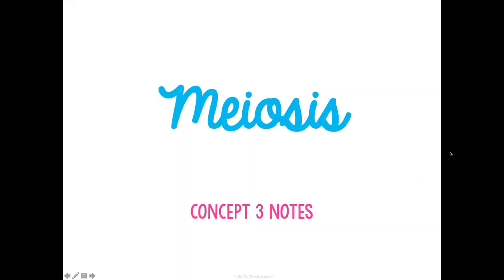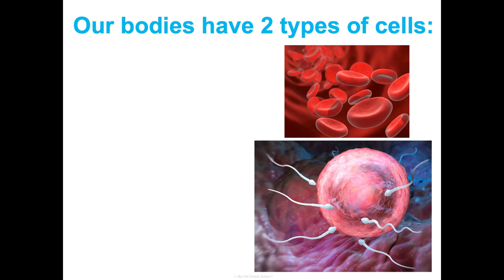Last but not least, concept three in our genetics unit: we are going to learn about meiosis. Now, we've already learned about mitosis. If you're in my class, we covered that in unit two, cells, so you may need to go back and refresh on that. But this is a different process, and this is a really, really important distinction. There are some very important vocabulary terms that we're going to go through at the beginning before we move on any further.